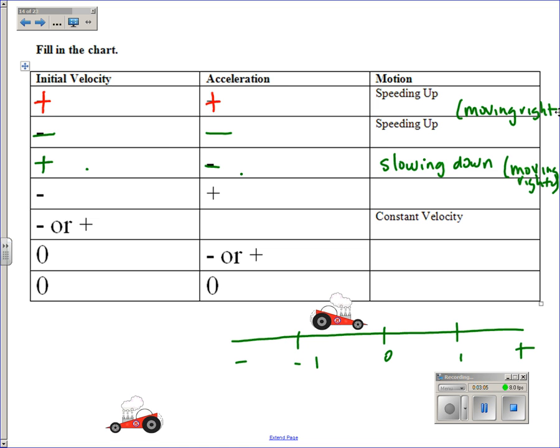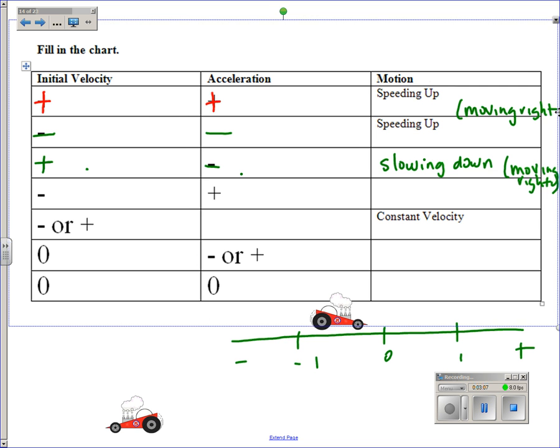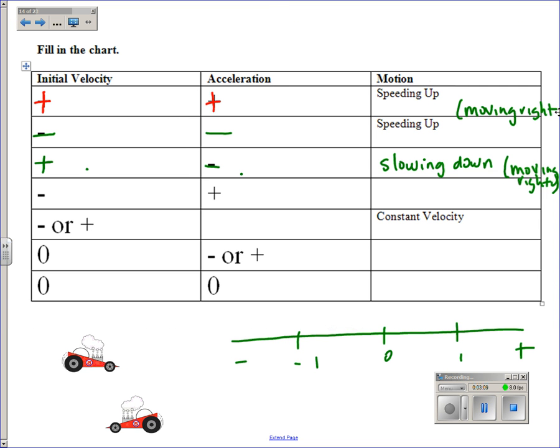If we've got an object with an initial velocity that's negative but it's got a positive acceleration, if these two variables are in opposite directions, then the object will again be slowing down.